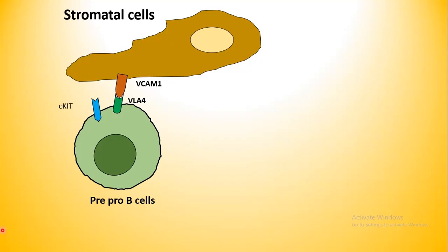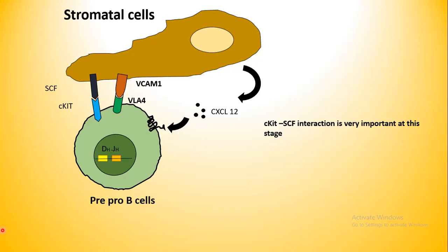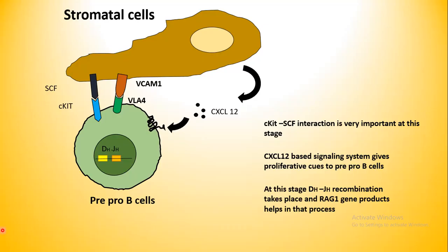The stromal cell expresses stem cell factor, or SCF. This SCF and C-kit interaction is an important cue for the proliferative signal to the B-cell. Another chemokine known as CXCL12-mediated signaling is also very important for the pre-pro-B cell. Two important phenomena happen here: C-kit and SCF interaction gives rise to a proliferative signal, and CXCL12-based signaling also gives rise to a proliferative signal. From this point onwards, the heavy chain D-J recombination starts.